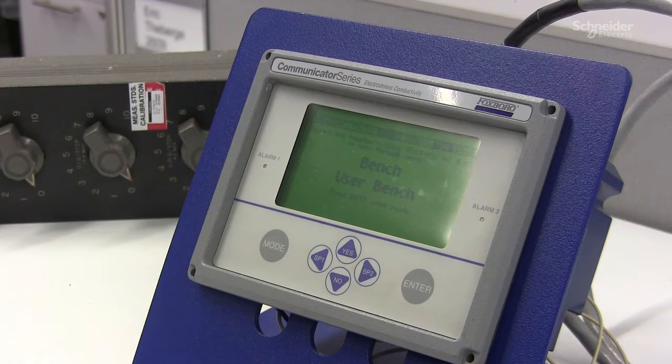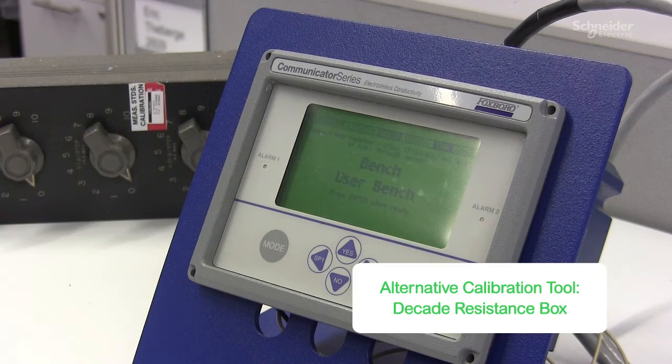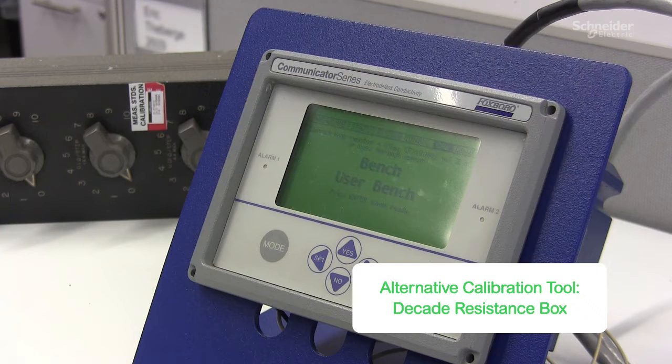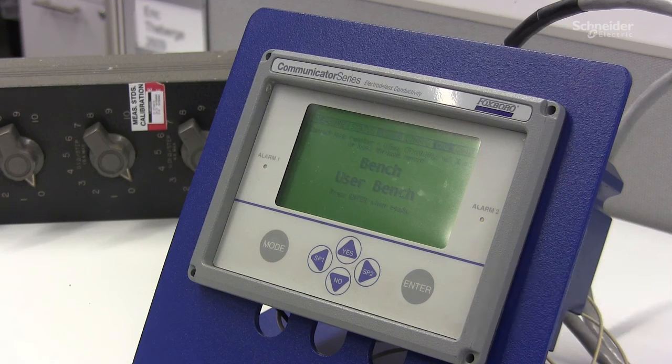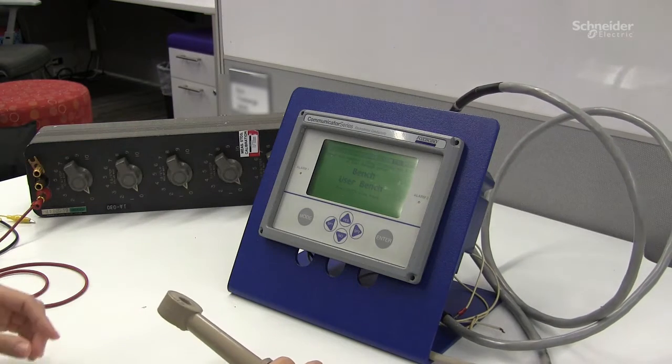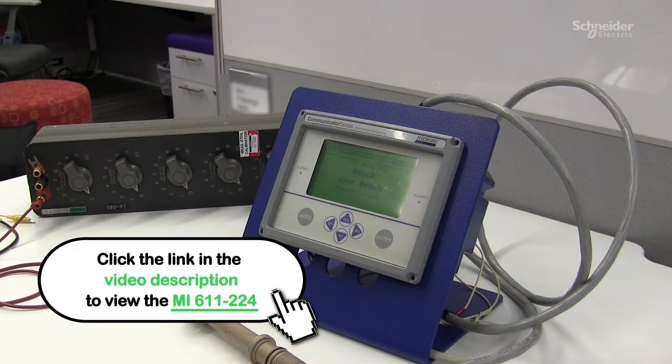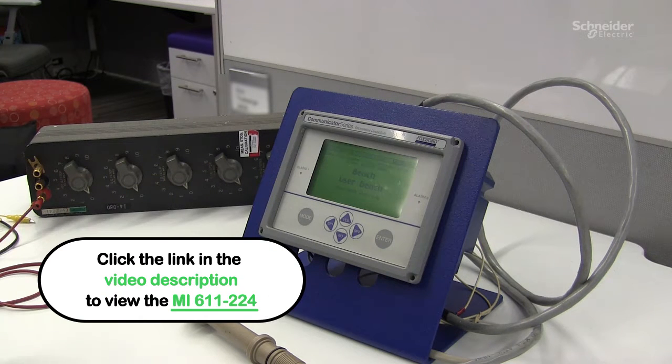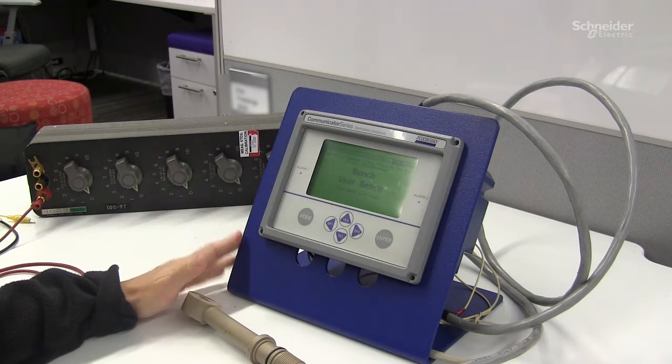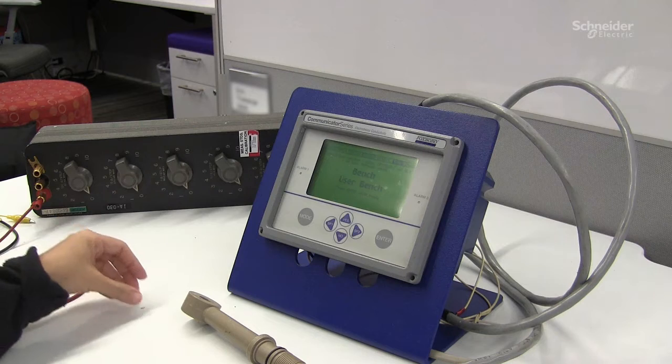So if you do not have a calibration plug, you need to have a decade box. But for you to use a decade box to calibrate your sensor, you need to apply some mathematics in a formula that is explained in the MI 611-224, that is the MI for the A75 EC analyzer.